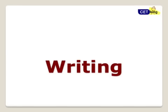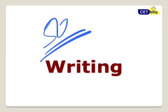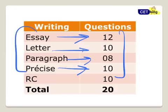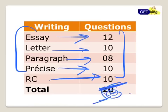Moving to the last part — writing skills, a 50 mark paper. There is nothing overly complicated about it. You have to write one essay, one letter, one paragraph, one précis writing — and you get options for that. You can choose the essay. And one RC which you have to solve. So total 50 marks. That's your overall view of the exam — please go through that again so that you can focus on that.